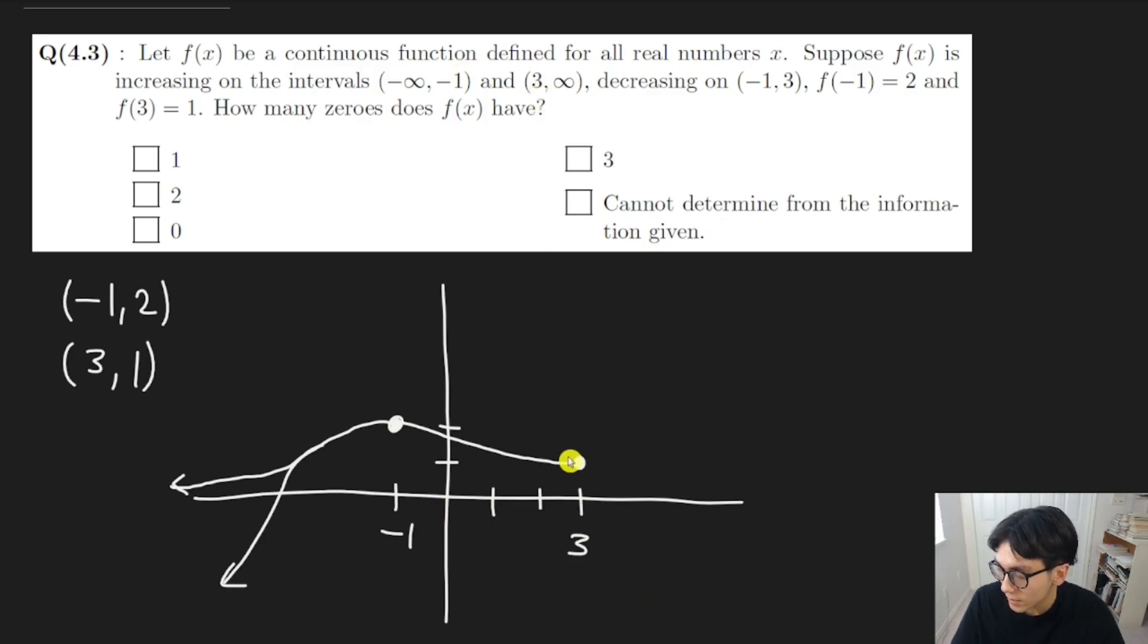And finally, it's increasing from 3 to infinity, so that means it has to go up. Once again, there's no zero that can be possible here because it has to be increasing the whole time. So that means in total, there could be 1 zero, but there isn't guaranteed to be 1 zero. So it's either 1 or 0, and we cannot tell with the information that we're given. And so the correct answer is we cannot determine with the information given. And that's pretty much it for this question.